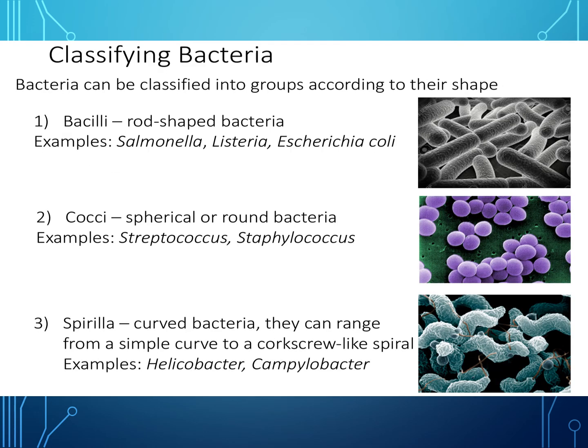Bacteria can be classified into groups according to their shape. Bacilli are rod-shaped bacteria — examples are Salmonella, Listeria, and E. coli. Cocci are spherical or round bacteria — examples are Streptococcus and Staphylococcus. Spirilla are curved bacteria — examples include Helicobacter and Campylobacter.